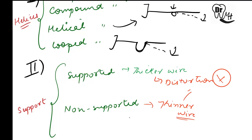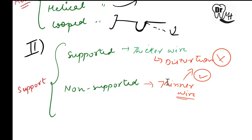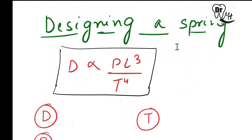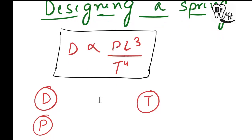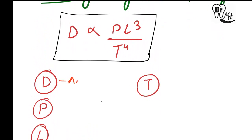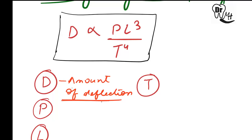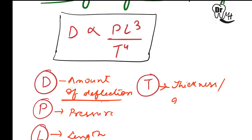Since thinner wire has chances of distortion, we'll study why we need thinner wire despite that risk. This can be explained by the spring design formula: d is directly proportional to p multiplied by l cubed, divided by t raised to the power 4. Here, d is the amount of deflection — that is, the elasticity; p is the amount of pressure; l is the length of the spring; and t is the thickness or diameter of the spring.